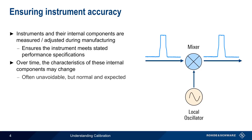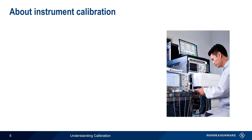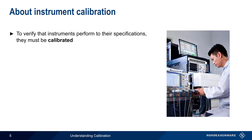This is often unavoidable, but is also normal and expected behavior. But if the characteristics of these components change too much, the instrument may no longer perform according to its stated specifications. Therefore, a process called calibration is used to ensure that instruments perform according to their specifications.